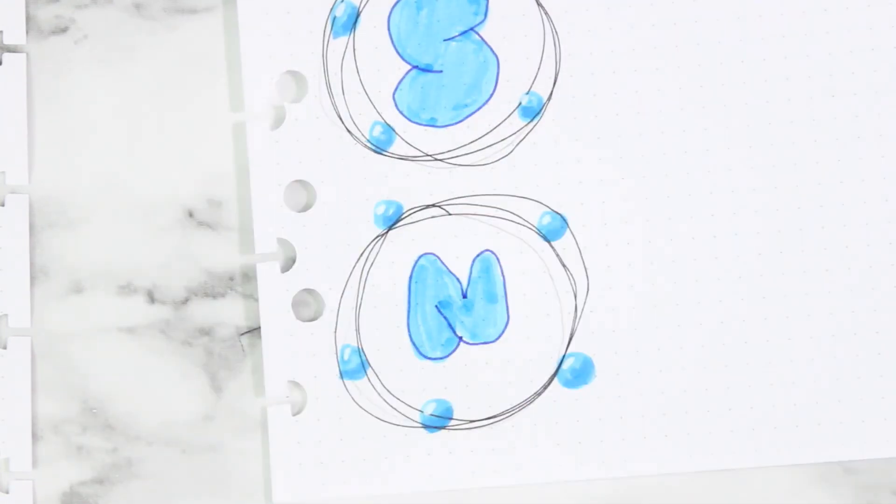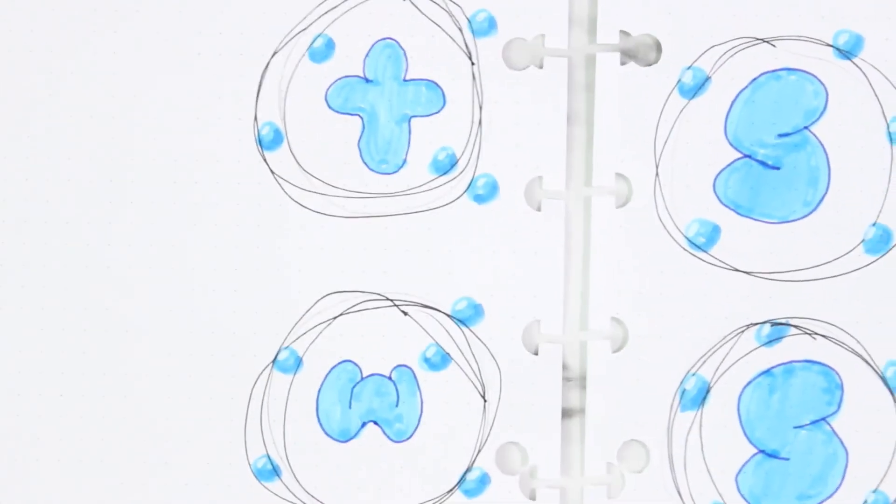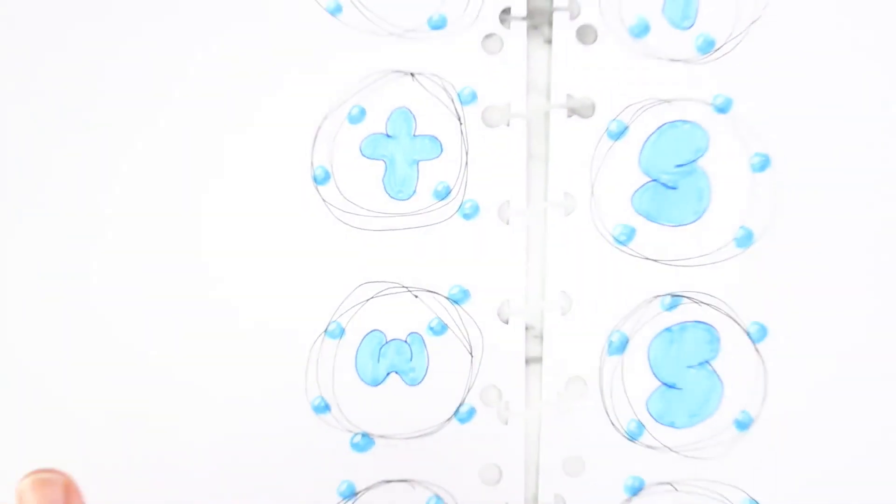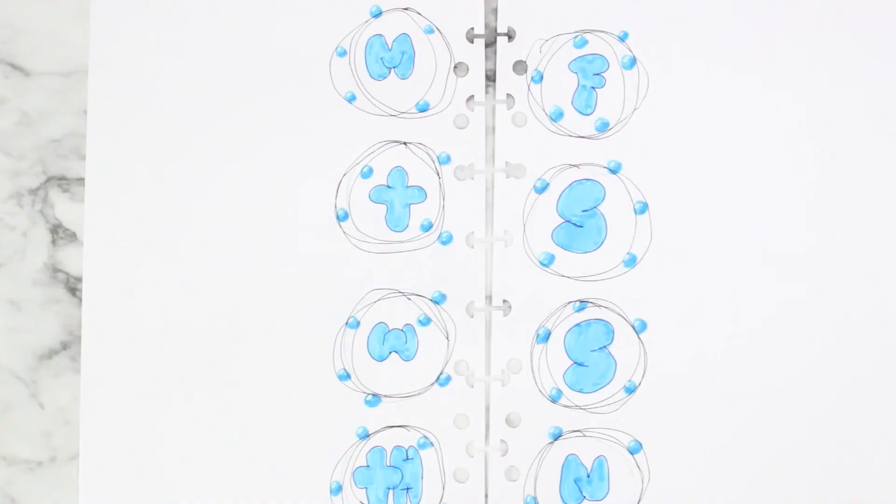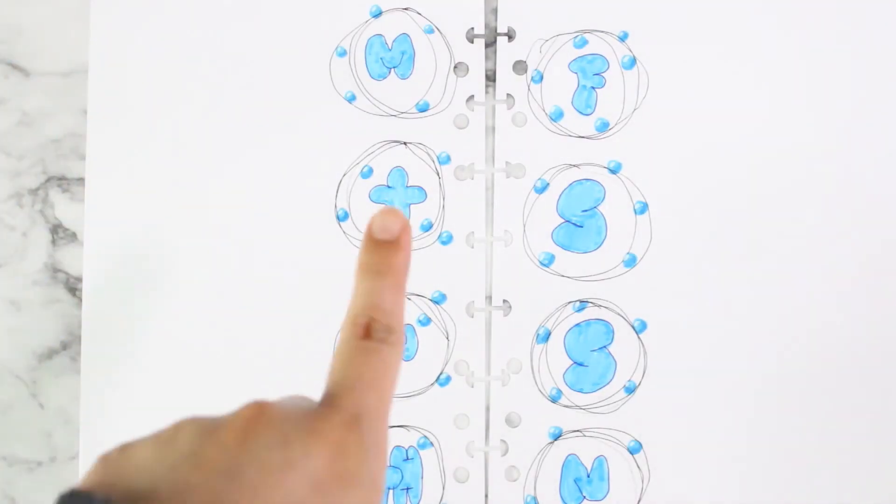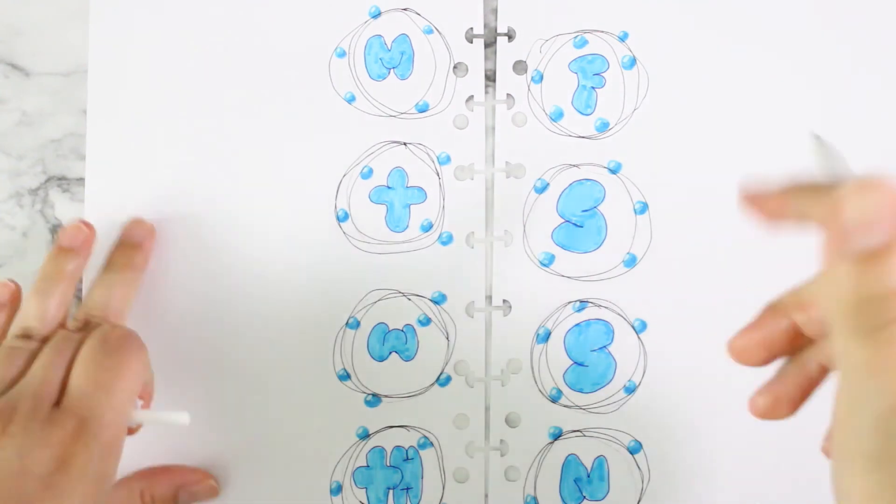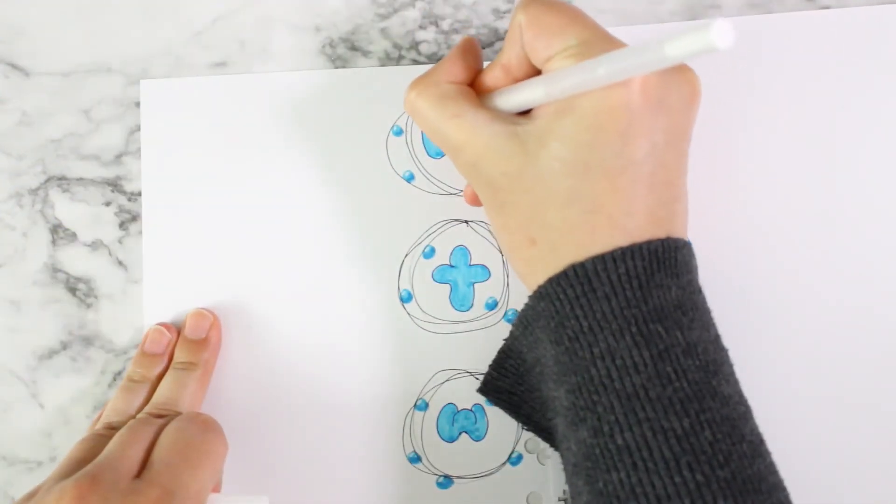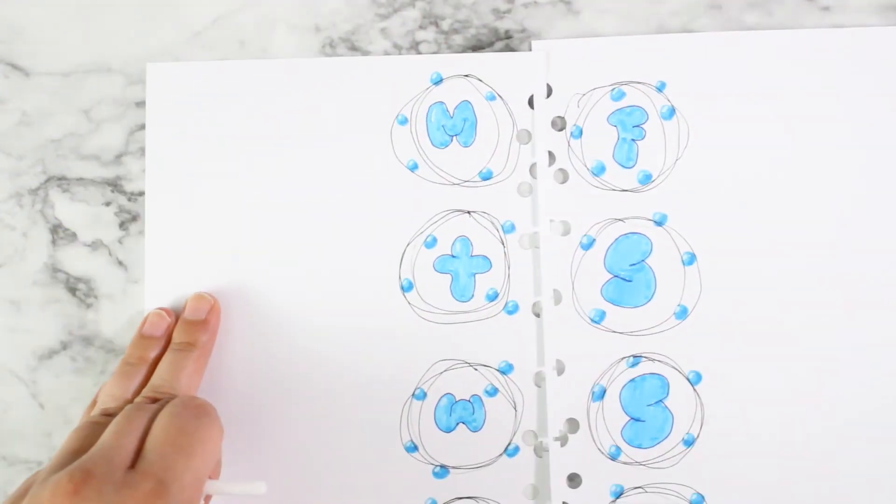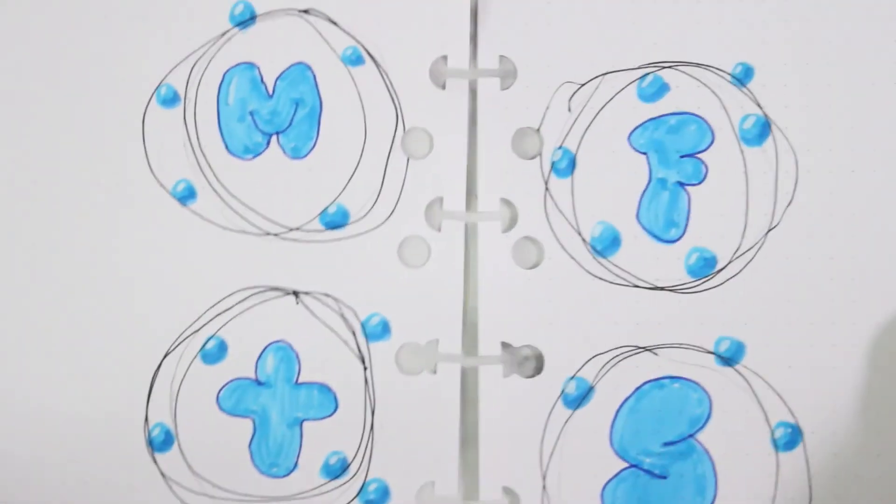That last section there on the bottom is for notes, but I think we're pretty much done. This is what the spread looks like. So that's Monday, Tuesday, Wednesday, Thursday, Friday, Saturday, Sunday, and notes. I'm just going to go ahead and add a little bit of white, same way I did for the bubbles.